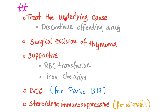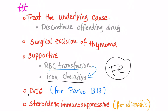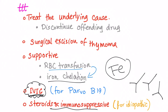Treatment: treat the underlying cause — for example, if it's a drug, discontinue the drug; if there is a thymoma, remove it. If needed, give RBC transfusions. When giving RBCs or blood, perform iron chelation because the iron load can cause secondary hemochromatosis (Fenton reaction). If the cause is Parvovirus B19, give IVIG, which inhibits the macrophages. For idiopathic cases, use steroids and immunosuppressives — because the pathophysiology involves antibodies and lymphocytes, immunosuppression takes care of that.